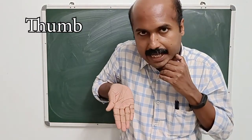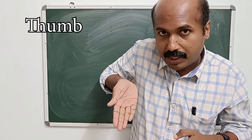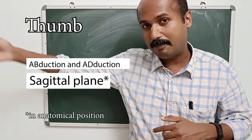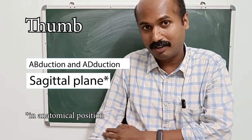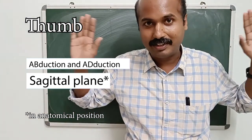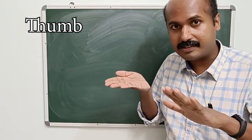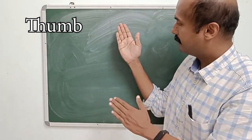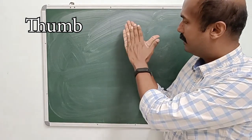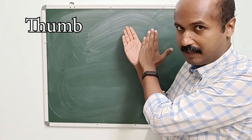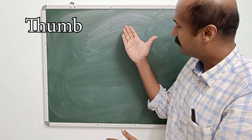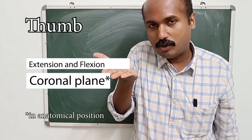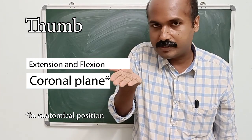Compared to the anatomical position, the abduction and adduction of the thumb are actually occurring in the sagittal plane — in contrast to abduction and adduction at the shoulder or hip, which occur in the coronal plane. If you look at extension and flexion of the thumb, extension is this movement, occurring in the plane of the palm itself. That means extension is a movement occurring in the coronal plane, and the reverse movement is flexion.